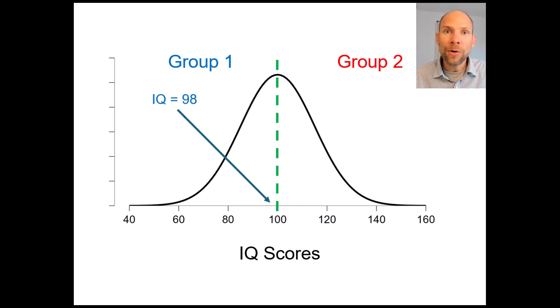Also if you looked at scores that are close to the median such as for example an IQ score of 98 which would be slightly below the median and therefore assigned to group one versus a score of let's say 102 which is only slightly higher slightly above the median of 100 but would be treated as a member of group two then those scores are actually very similar. You can see that